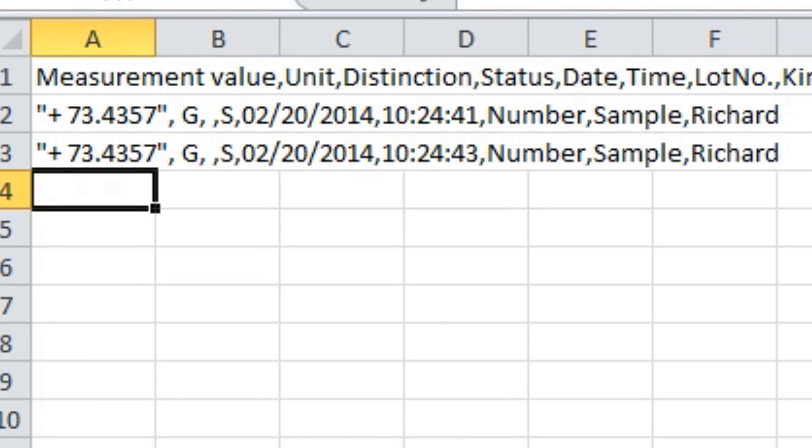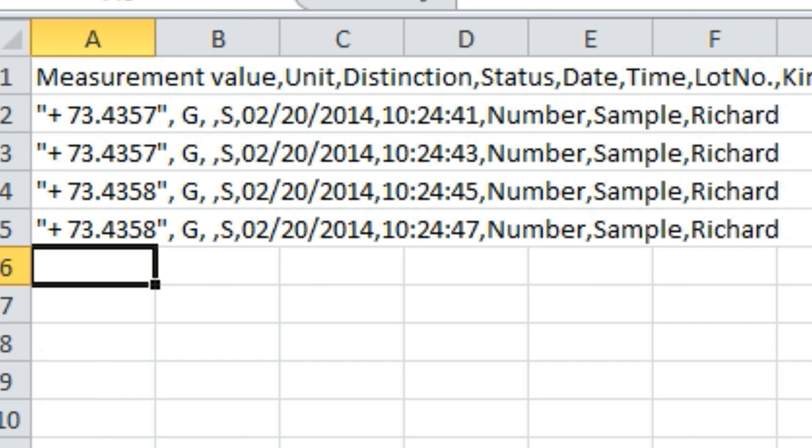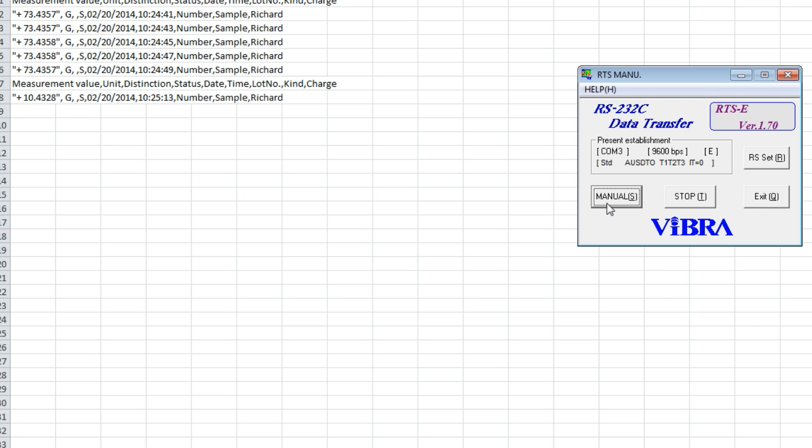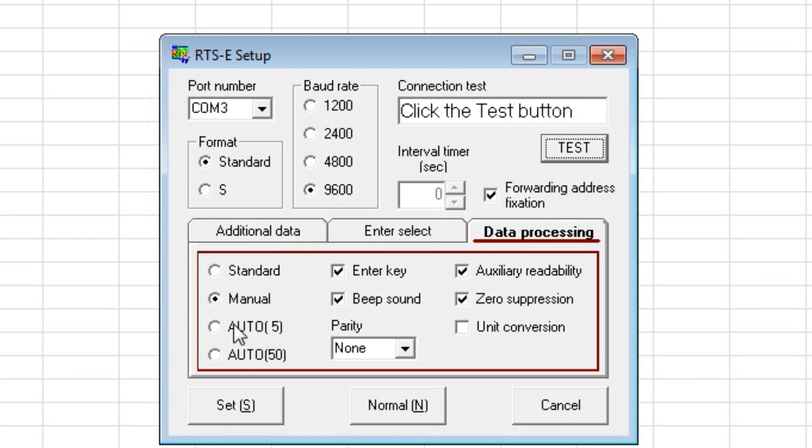Weighing data can be recorded at set intervals, manually, or can be set to automatically record when the balance reaches stability past a threshold of 5 grams or 50 grams.